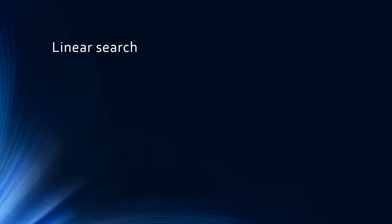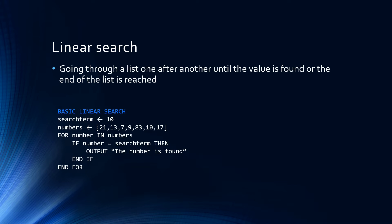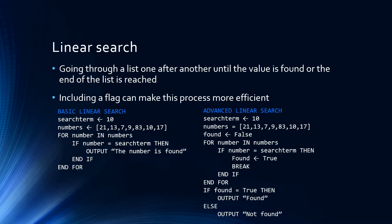A linear search is the simplest kind of search. It involves going through a list one value after the next to see if the value is found or not before reaching the end of the list. This process can be made more efficient by using a flag — simply a variable that you can store some information in. In this case we're using the variable 'found' to store whether or not we've already found a number.